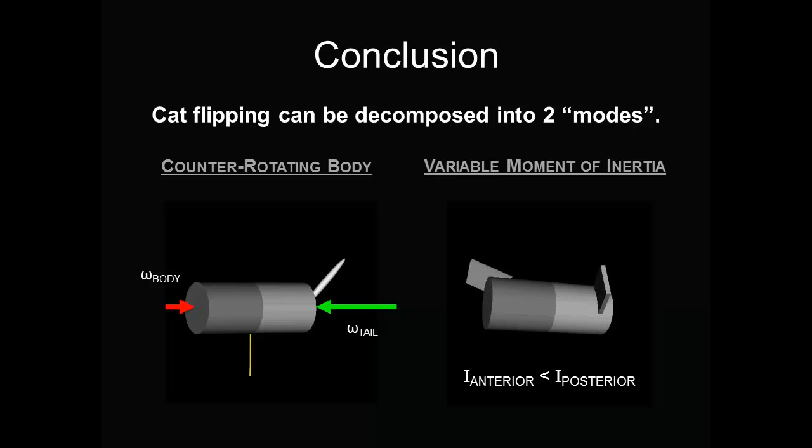The second mode relies on the variation of the body's moment of inertia throughout the fall. In this case, the spine can twist. To get one half of the cat to counter-rotate faster than the other, that half's moment of inertia must be reduced. This happens by bringing in those legs close to the body. The other half's legs stay normal to the body.